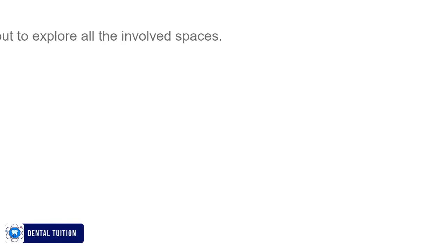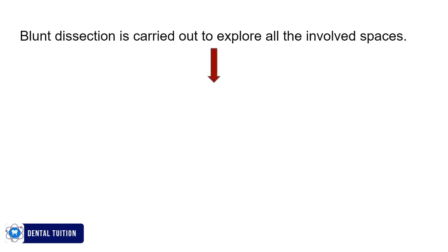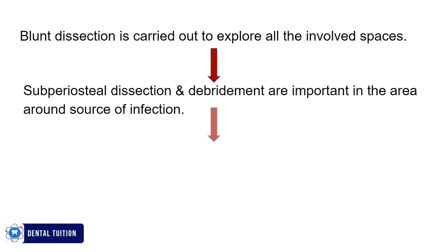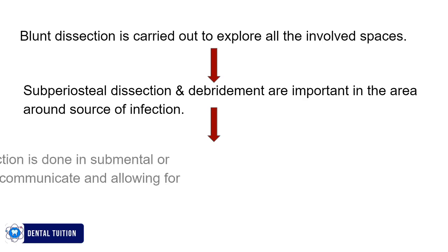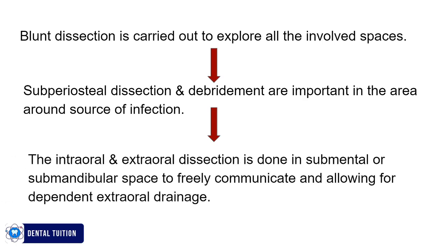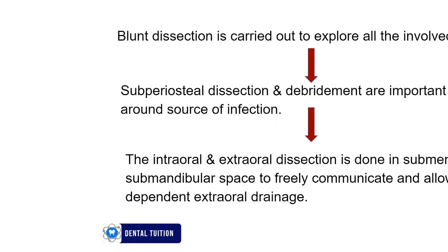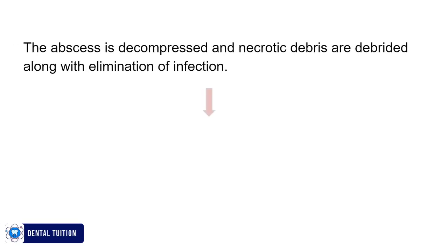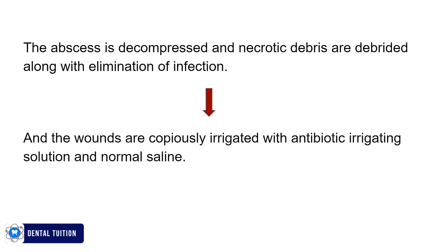Blunt dissection is carried out to explore all involved spaces. Subperiosteal dissection and debridement are important in the area around the source of infection. Intraoral and extraoral dissection is done in the submental or submandibular space to freely communicate and allow for dependent extraoral drainage. The abscess is decompressed, necrotic debris is debrided along with elimination of infection, and the wounds are copiously irrigated with antibiotic irrigating solution and normal saline.